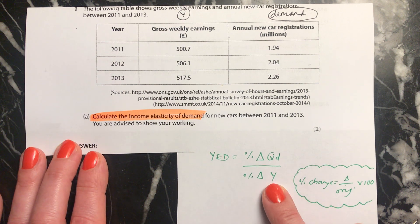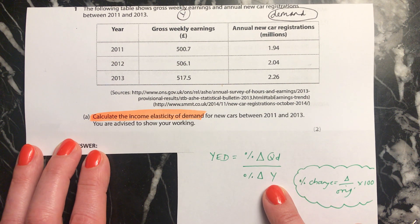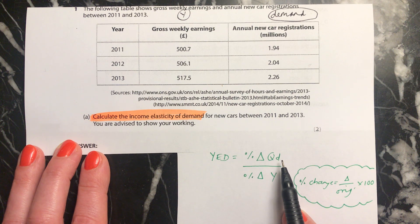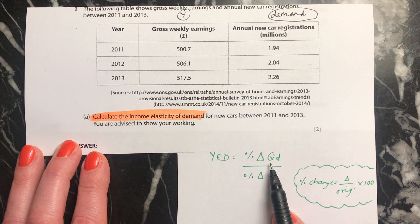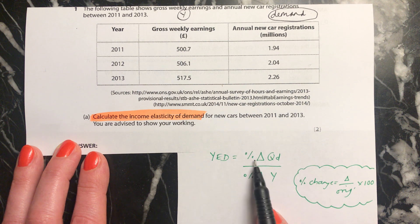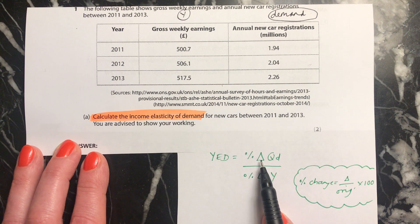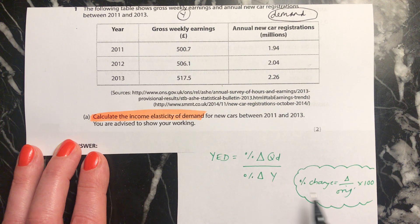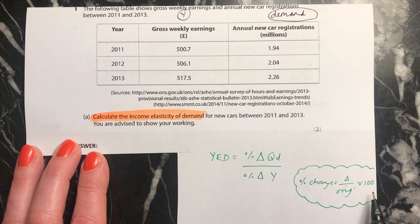This is the formula you need to learn for income elasticity of demand. Remember, it's always demand or supply on the top line. To do this, you need to know how to work out a percentage change, because it's the percentage change in quantity demanded over the percentage change in income. To do a percentage change, it's the change divided by the original figure times 100.